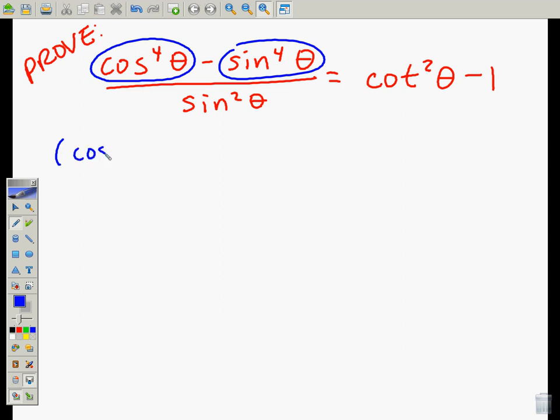cosine squared theta minus sine squared theta times cosine squared theta plus sine squared theta. Our denominator remains the same.